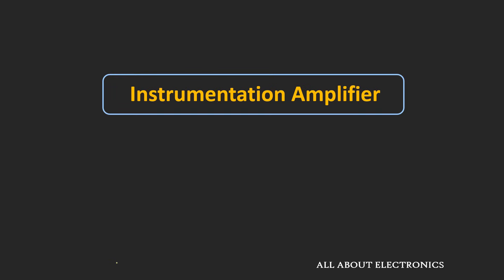Hey friends, welcome to the YouTube channel all about electronics. In this video, we will understand about the instrumentation amplifier. This instrumentation amplifier is a kind of differential amplifier, but it has very high gain, very high common mode rejection ratio, and very high input impedance. It is used in industrial applications as well as in test and measurement circuits. We will understand how it differs from the op-amp-based differential amplifier, and why it is preferred in certain industrial applications.